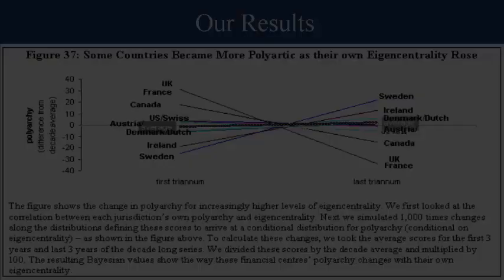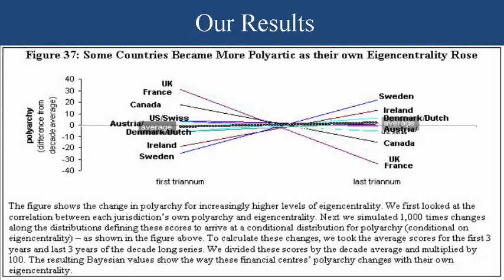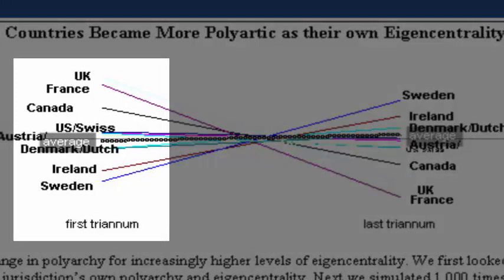Figure 37 shows one of those snapshots for the 10 years that we looked at. Namely, the figure shows the increase in polyarchy for the first three years of the decade we looked at, and the change in the last three years of that decade. For some countries like Sweden,